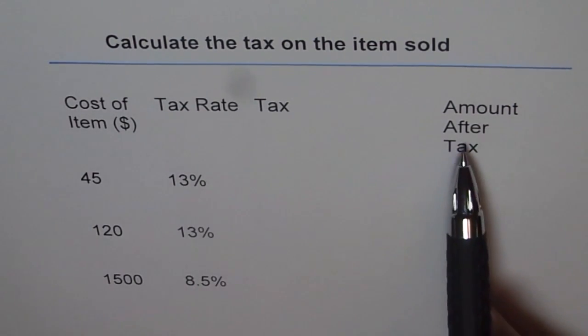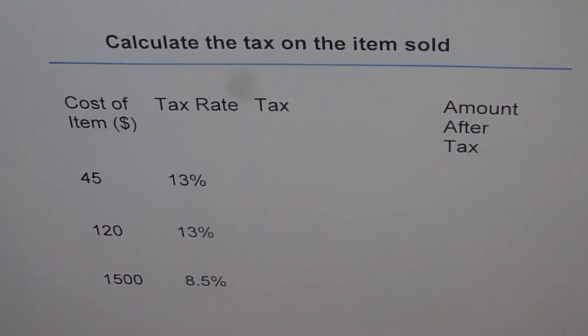Add them up and write amount after tax. So that is how you are going to complete this table. And in the process, learn how to calculate tax and how to find the amount of the item which you actually pay after tax. Let's do it.